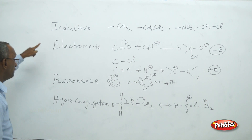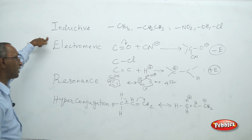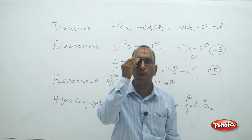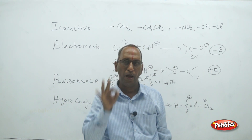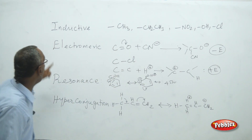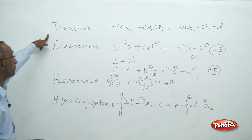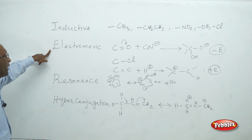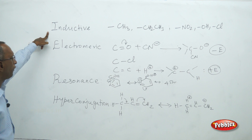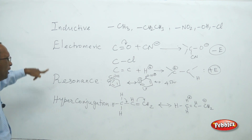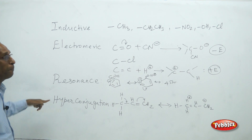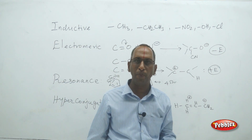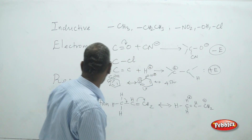Now we will see the effects involving these transient intermediates. Electronic displacements of a covalent bond in an organic compound may be of these types: inductive effect, electromeric effect, resonance effect, and hyperconjugation effect.